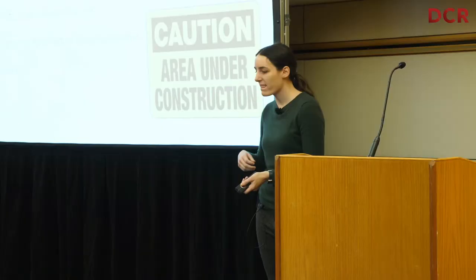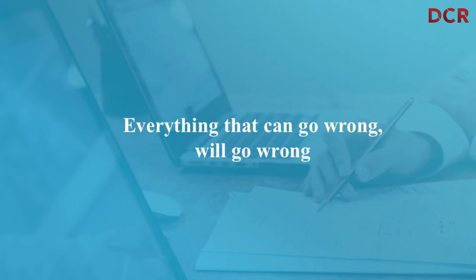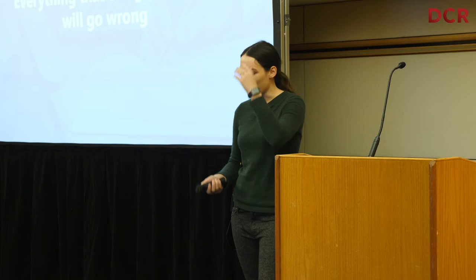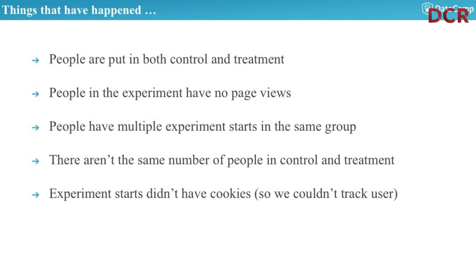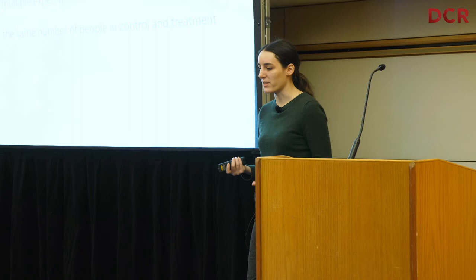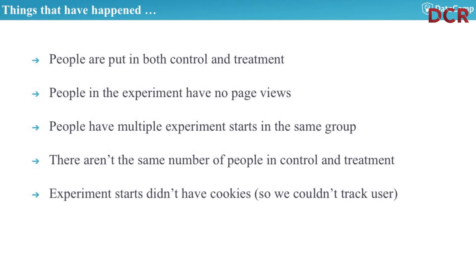Now for my next lesson: in A/B testing, everything that can go wrong will go wrong. A couple of things happened at DataCamp when I was starting out — and it happens at old shops like Etsy too. Things that have happened: people are put in both the control and the treatment group, which should never happen since you're randomly assigned based on your cookie. People in the experiment have no page views. People have multiple experiment starts in the same group. There aren't the same number of people in control and treatment — called bucketing skew — when it should be 50/50.